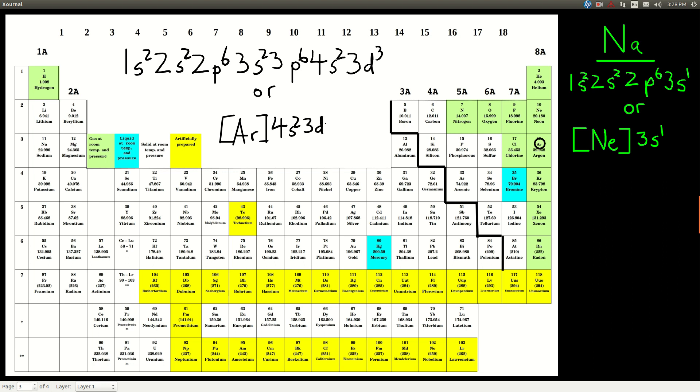so we'd say argon, and then just everything that comes after that up to our vanadium, so it would be 4S2, then 3D3, easy as that, so just remember, read the ends of each of the blocks, all the way through, left to right, top to bottom, until you get to the block that you're in, and then just count over how many columns, and then just write the electron configuration.